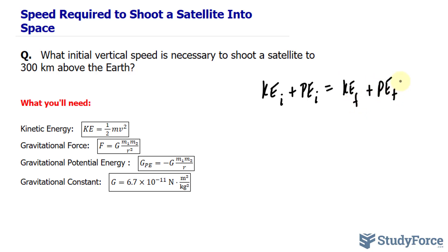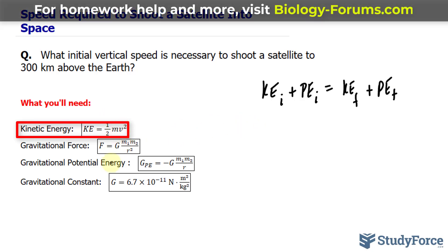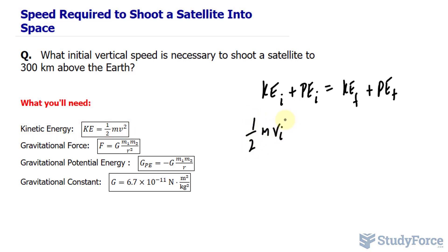So we're looking for the initial vertical speed. The formula for kinetic energy is shown right here. And as you can see, one of the factors is velocity, which we'll be using to help solve this problem.